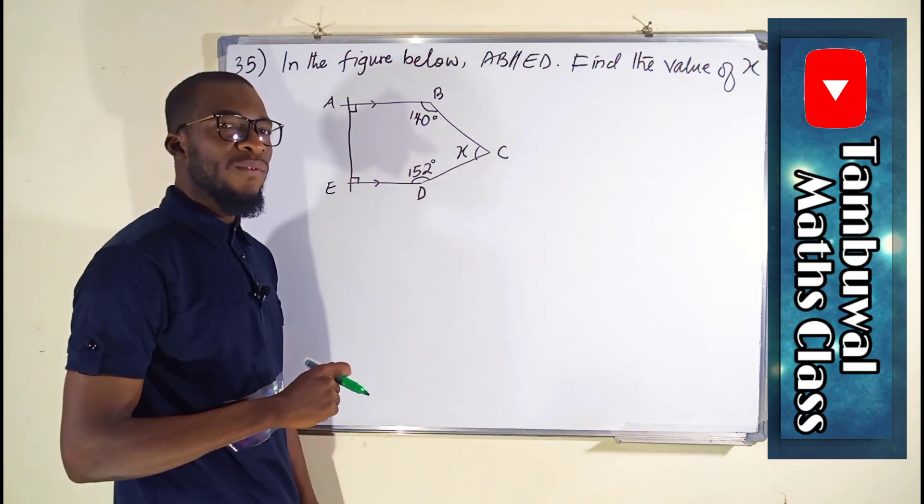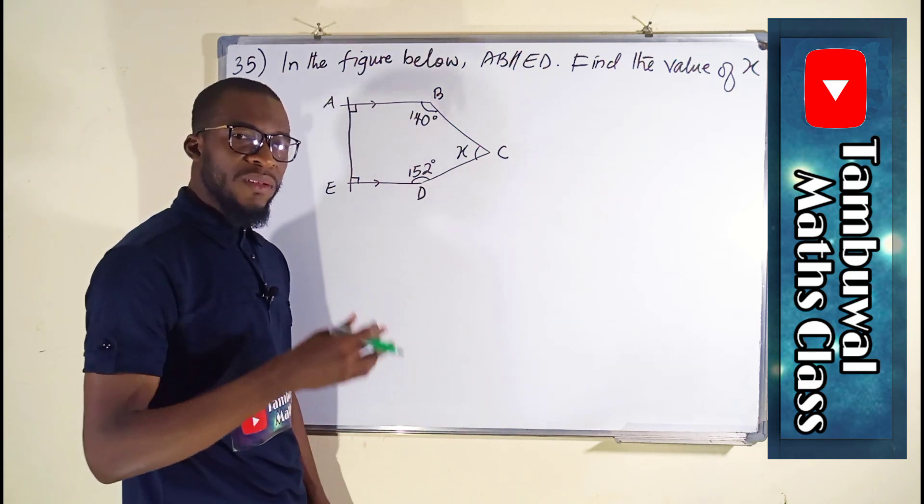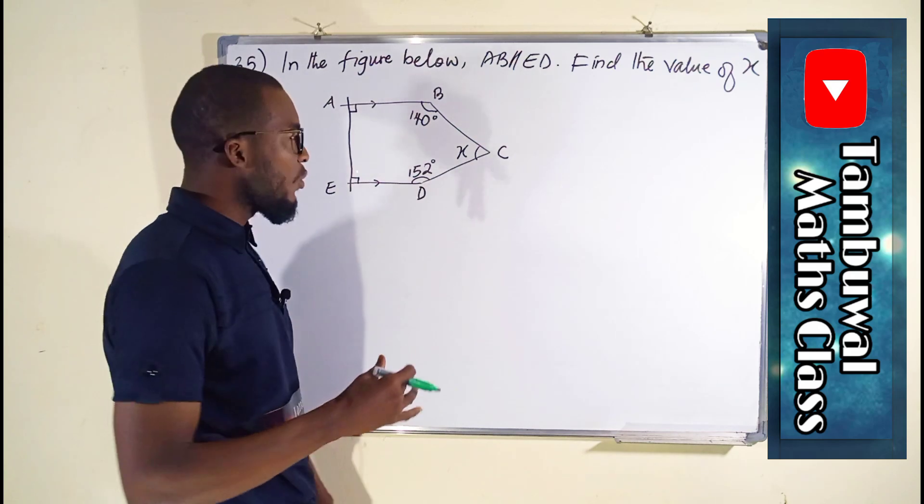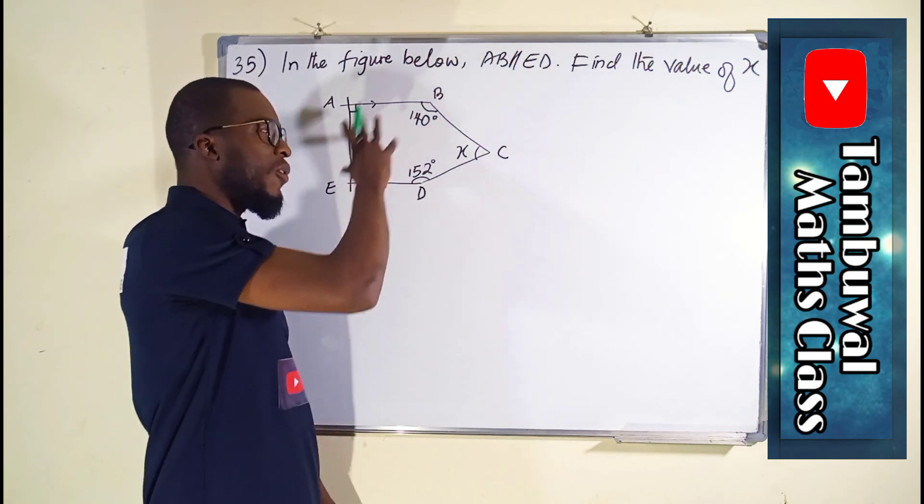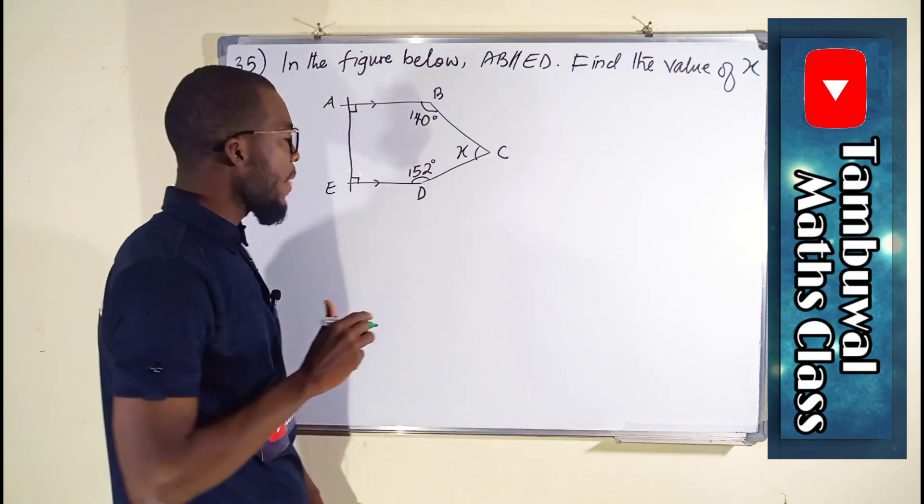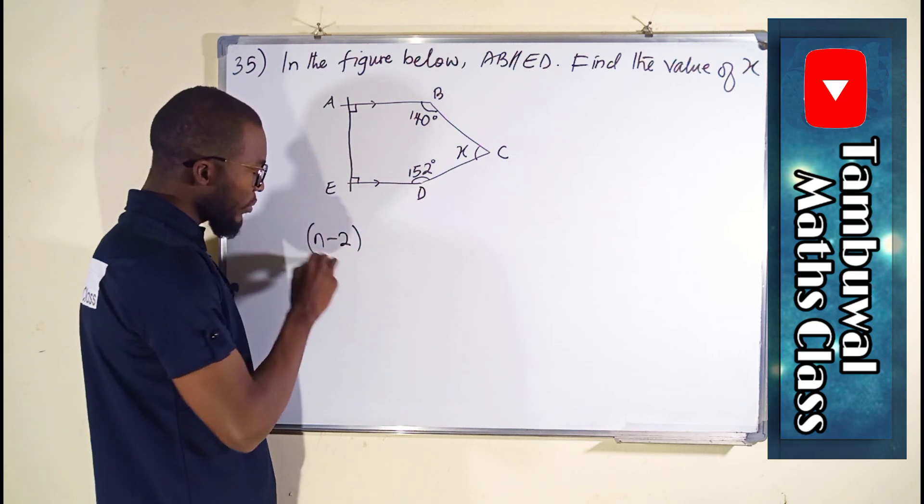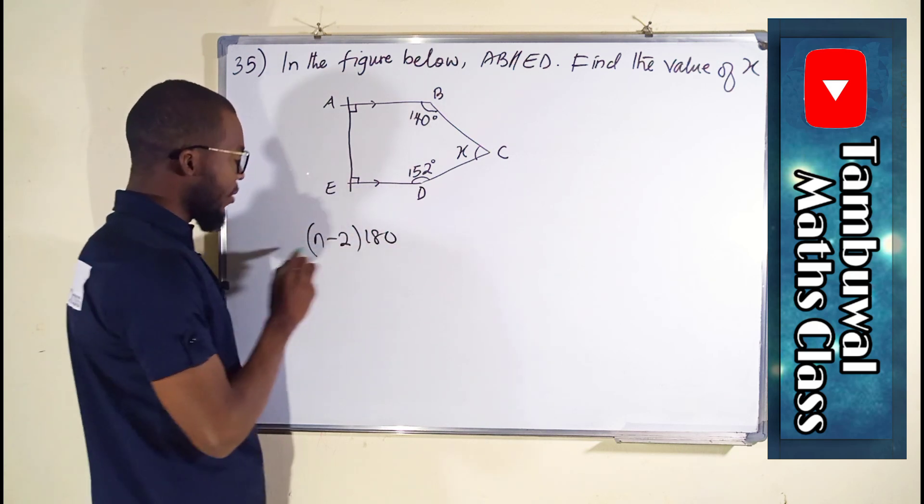Why? Because there is a particular formula that will always guide us in finding the sum of all the interior angles of any polygon, and that formula is (n - 2) times 180.